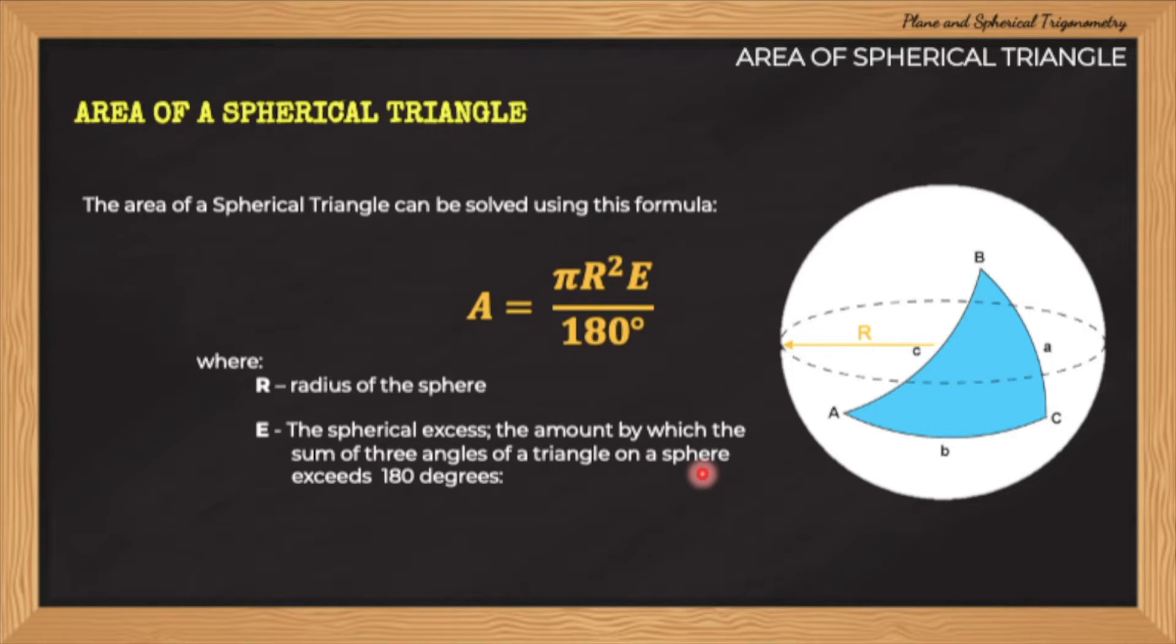And E is the spherical excess. This is the amount by which the sum of the three angles of the triangle on a sphere exceeds 180 degrees. So we can compute the spherical excess E by using the formula A plus B plus C minus 180 degrees.